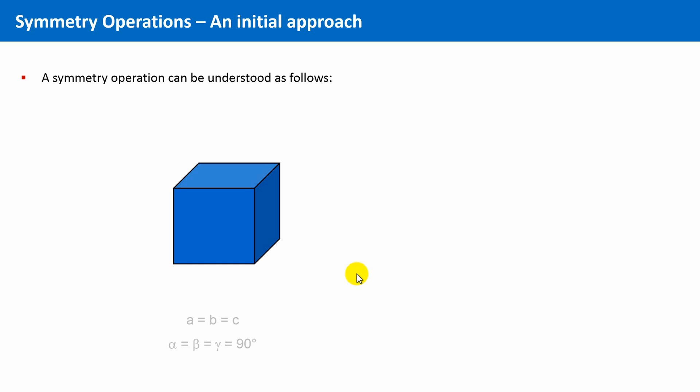A symmetry operation can be understood as follows. Take an arbitrary object, for instance, this cube. Then we shut our eyes, and someone will do something with the cube, a geometric operation, for example, a rotation by 90 degrees.